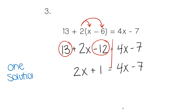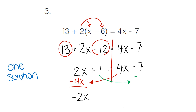If you have a one solution problem, we continue solving the equation. We would move our 4x to get negative 4x. Positive 2x minus 4x gives us negative 2x. We would also move our positive 1, which changes to negative 1, and we end up with negative 8. Our final step is to divide: negative 8 divided by negative 2 gives us a positive answer of 4. So our one solution is the number 4 — only the number 4 is correct.